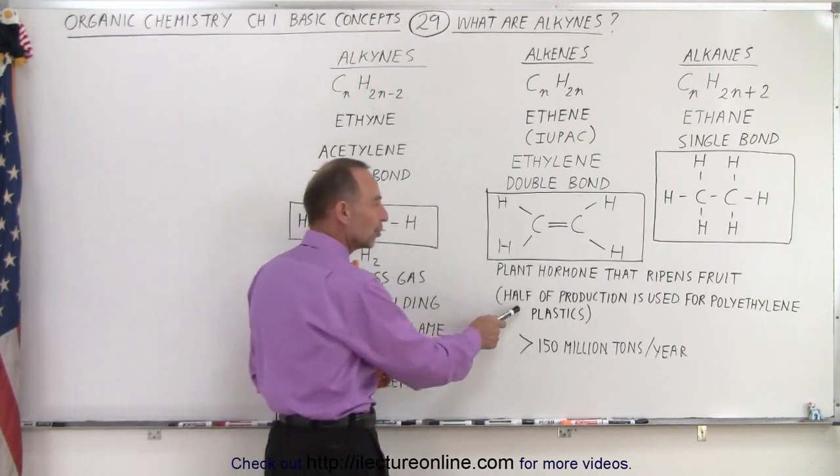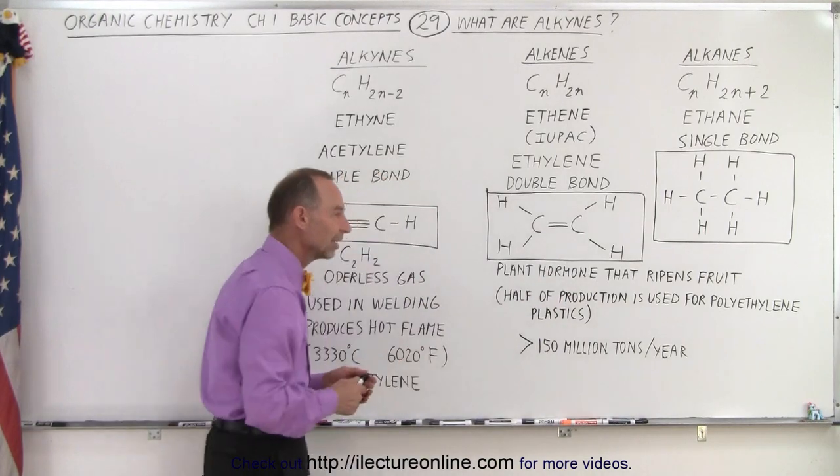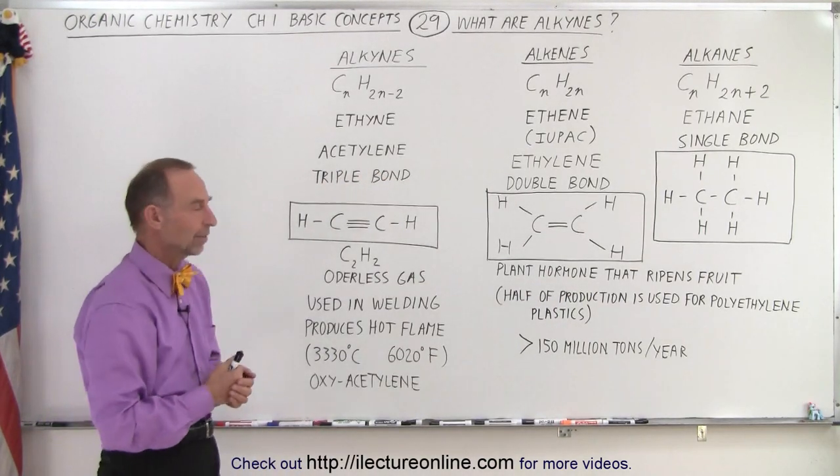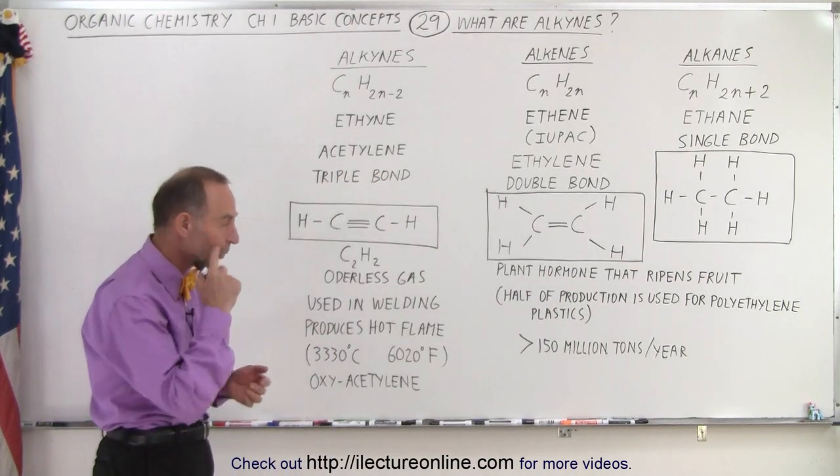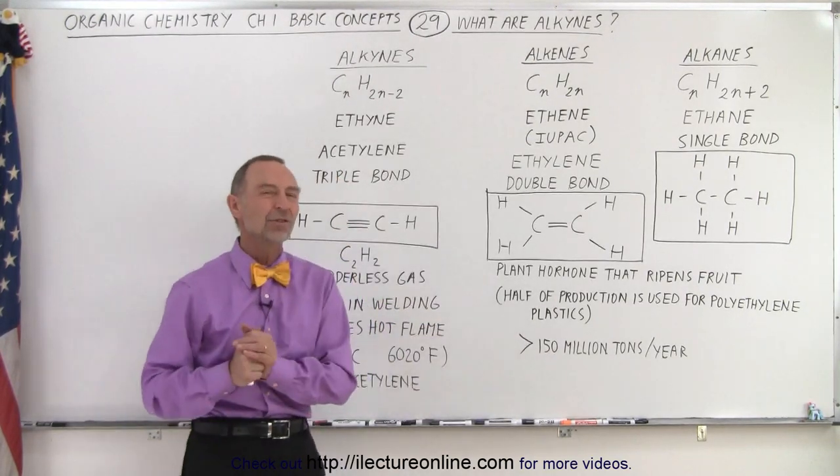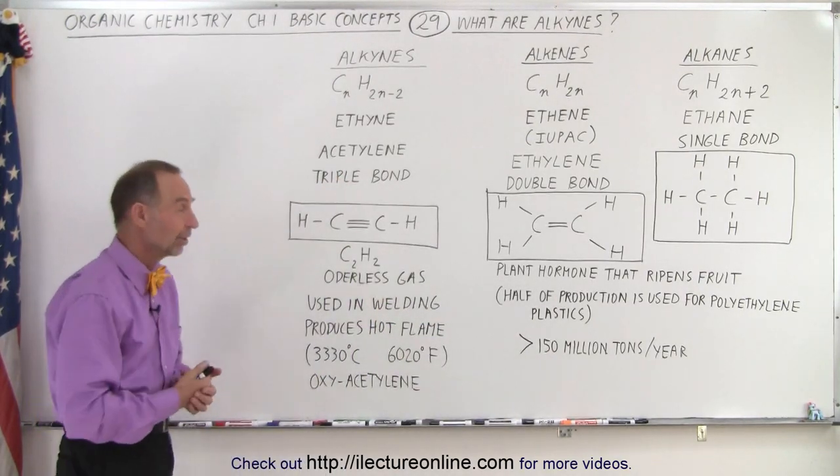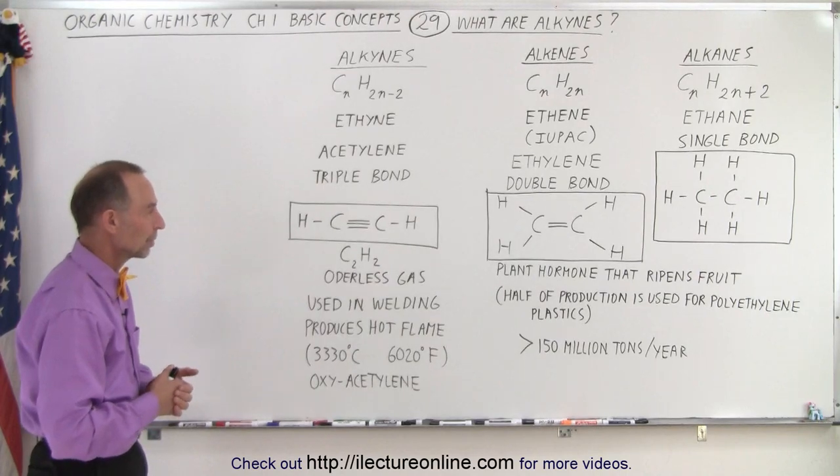Half of the ethylene that's produced in the world is used for plastics, polyethylene plastic. So there's a lot of that going on in the world. And we produce about 150 million tons of ethylene per year. So it's a very common chemical that we use in production.